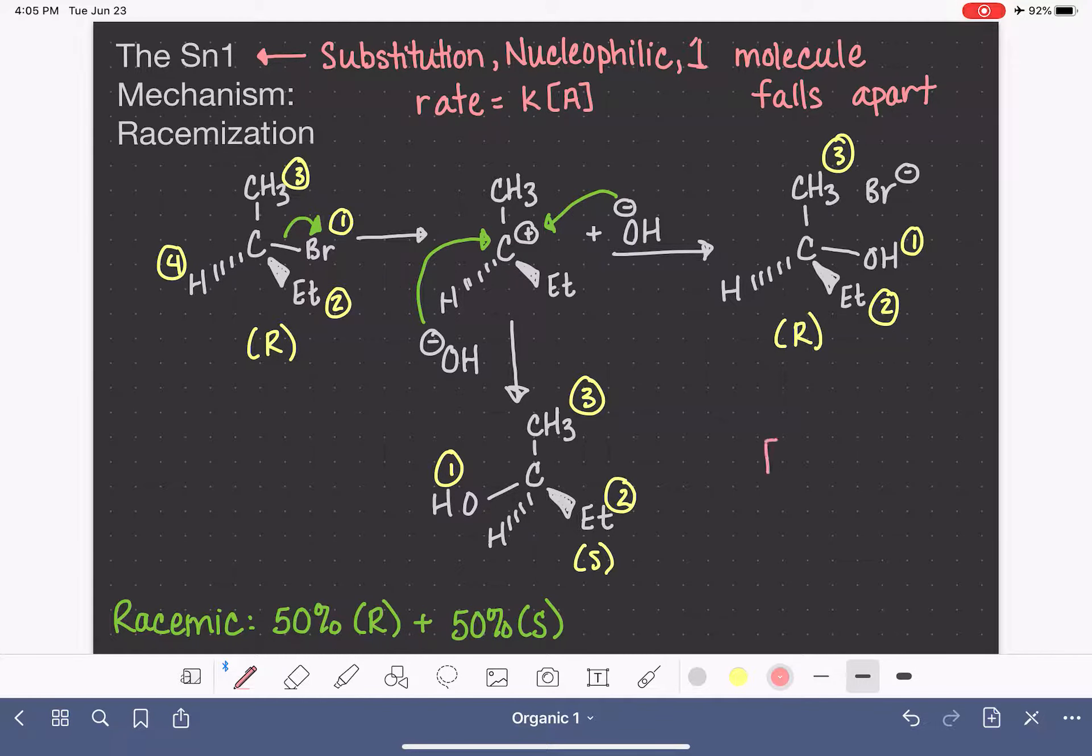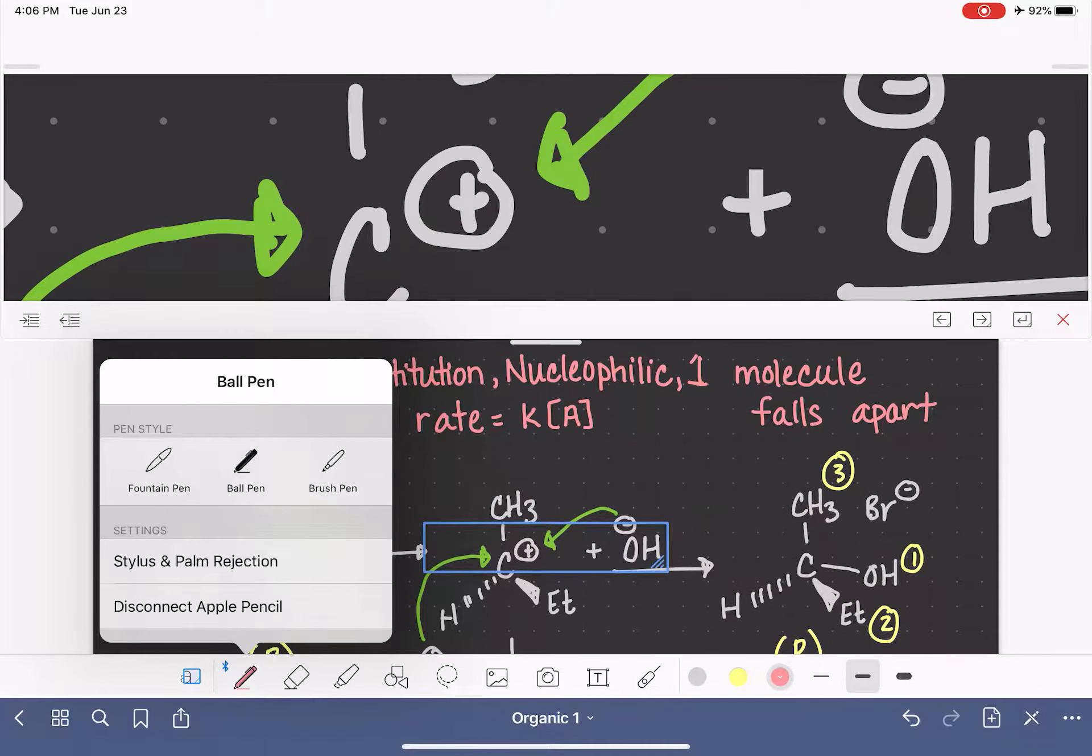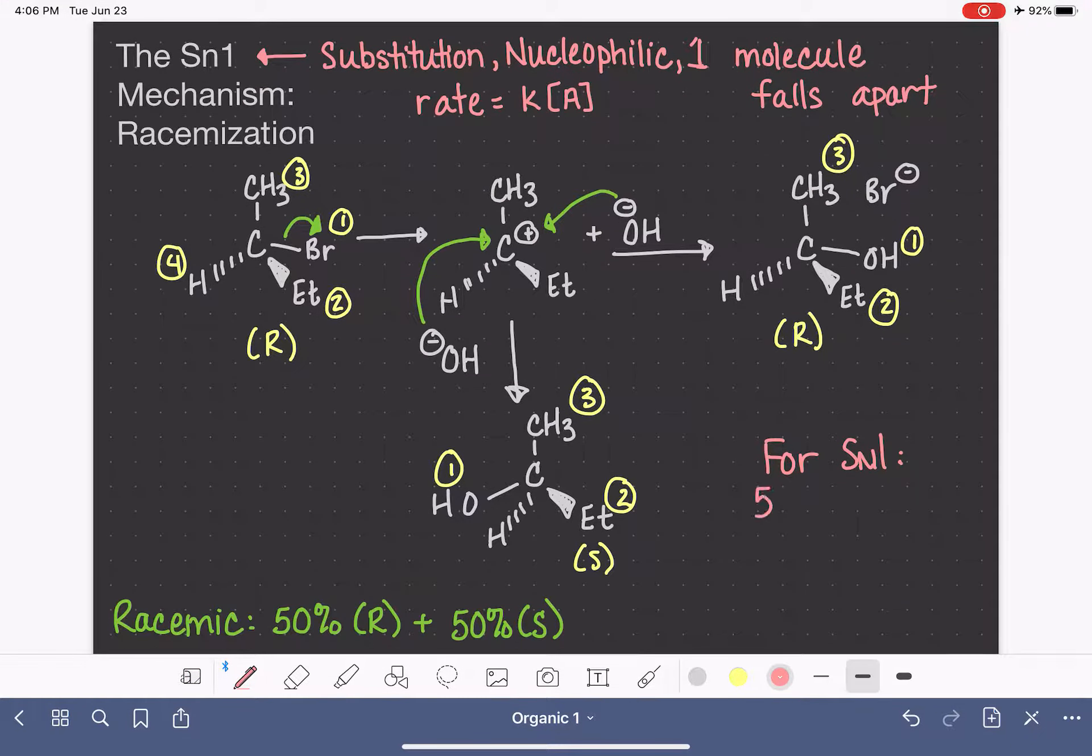In summary, for SN1, if we are starting with a chiral carbon, we are going to get 50% of our product with the R stereochemistry and 50% of our product with the S stereochemistry.